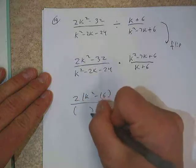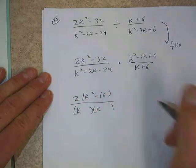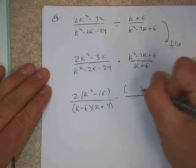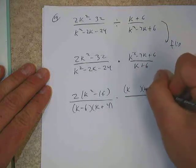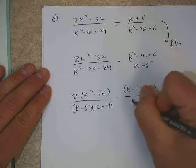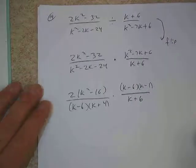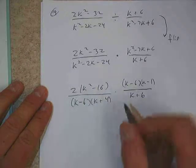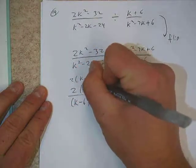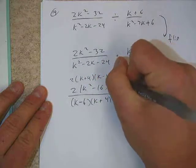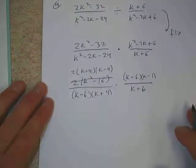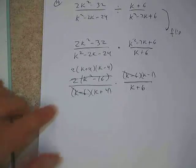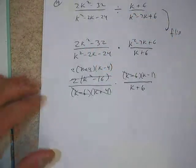We don't want to multiply the tops and bottoms at this point. We want to reduce first. So on the top left here we'd have a 2. And if we took that out, we'd have k squared minus 16. And on the bottom here, if we did our AC method, we could change that to k and k. And this would be minus 6 and plus 4 if we factored that properly. And up here we'd have a k and a k, minus 6 and minus 1. And then we'd have k plus 6 right here on the bottom of this fraction. So the question is, are we done factoring? And the answer is no, because we should recognize here that we also have a difference in perfect squares. So I'd go k plus 4, k minus 4.